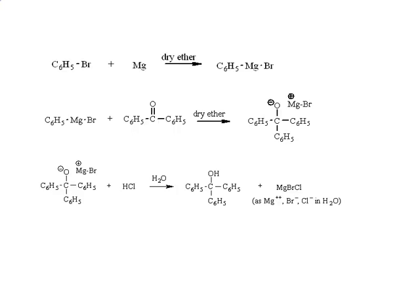Hi, everybody. Let's talk about the Grignard reaction. In this week's lab, you can take bromobenzene, react it with magnesium to form the Grignard reagent — that is your aryl magnesium halide — that then will react with benzophenone. The product gets protonated and you have your tertiary alcohol.